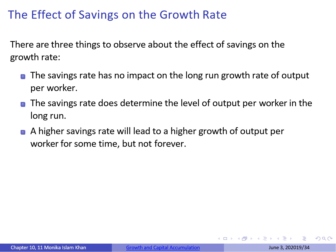There are three things to observe about the effect of savings on the growth rate. First, the savings rate has no impact on the long-run growth rate of output per worker. Second, the savings rate does impact the level of output per worker in the long run. Third, a higher savings rate will lead to higher growth of output per worker in the short run only, but not in the long run.